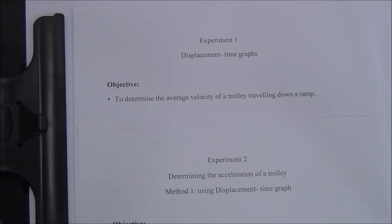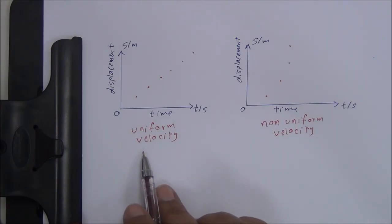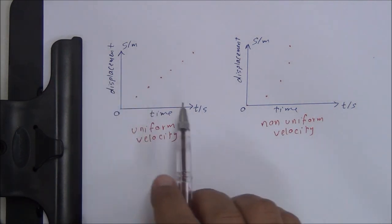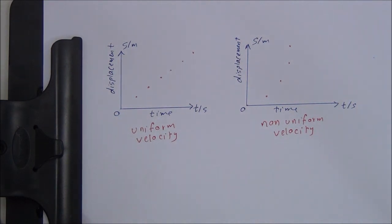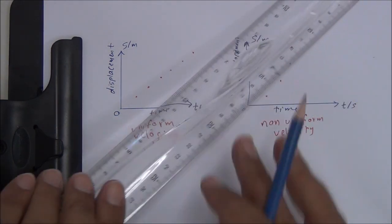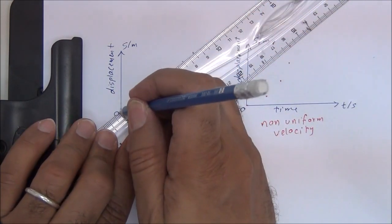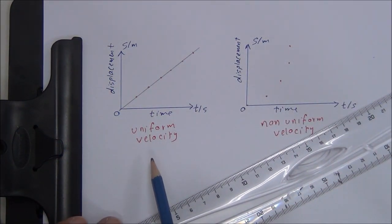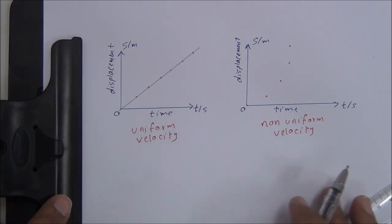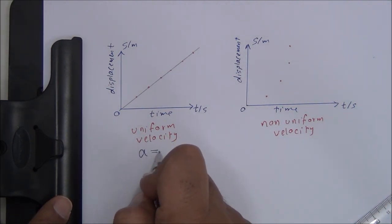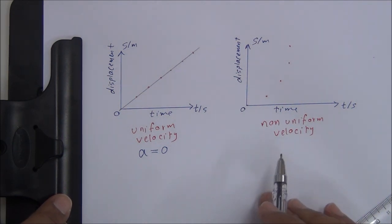In this experiment, I'm going to calculate the average velocity and acceleration from a displacement-time graph using an air track. First, we need to understand the difference between uniform velocity and non-uniform velocity. In uniform velocity, when we plot the points they fall on a straight line passing through the origin. Uniform velocity means there is no acceleration, or the resultant force acting on the object is zero — so acceleration equals zero.